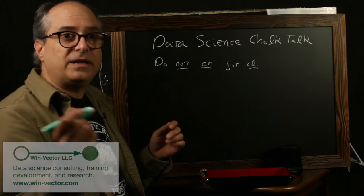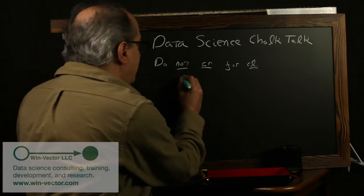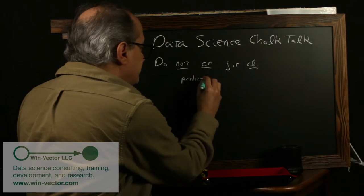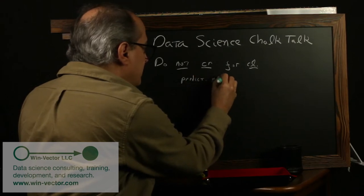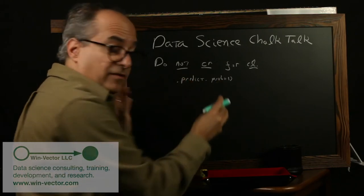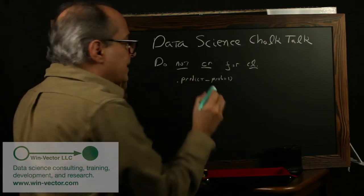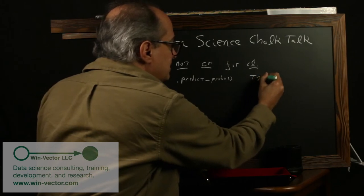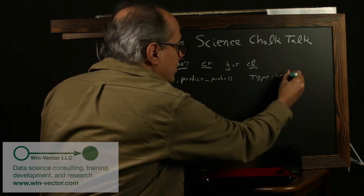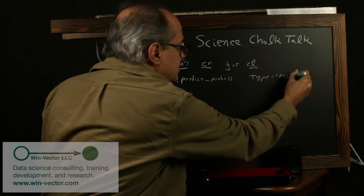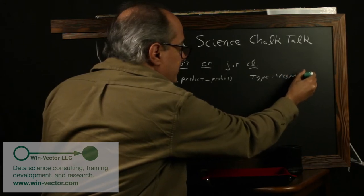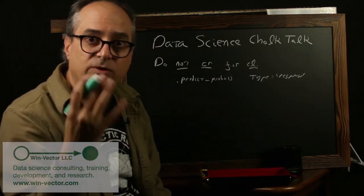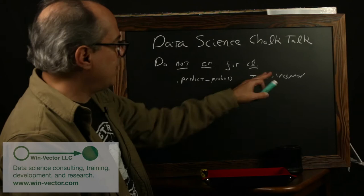So, in a software point of view, all it means is in Python, remember to call predict_proba instead of predict. In R, it means to set something like type equals response. I think R actually defaults to that anyway in many cases, but it's worth checking. Not in all cases.